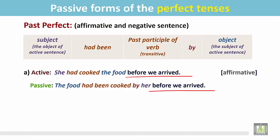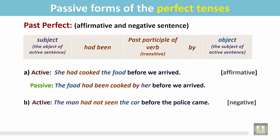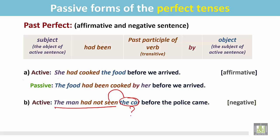The clause with the conjunction is unchanged here because there is no object for the verb in that part of the sentence. Another example: 'The man had not seen the car before the police came.' This is an active sentence in the negative as a statement. The man had not seen — what? The car.